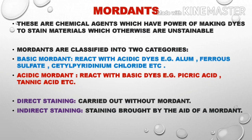Staining can be classified based on the use of mordants into direct staining and indirect staining. In direct staining, we simply apply the stain directly to a specific specimen to get a microscopic view. In indirect staining, a mordant is added to increase the binding efficiency between the specimen and the stain.